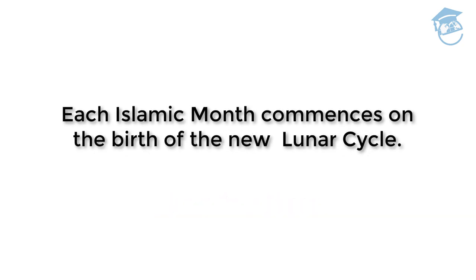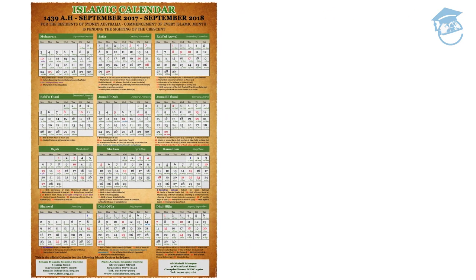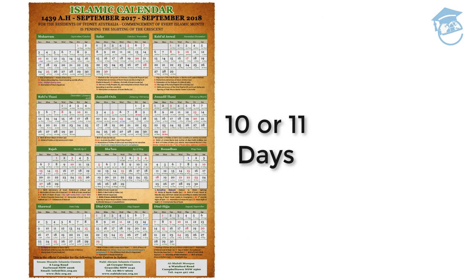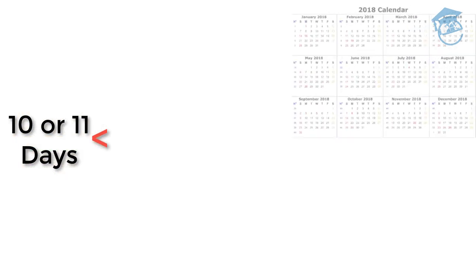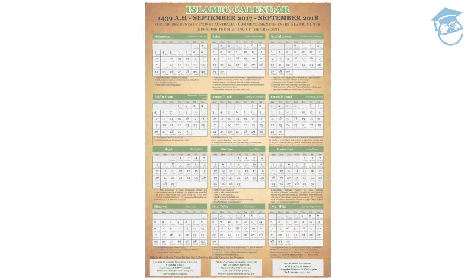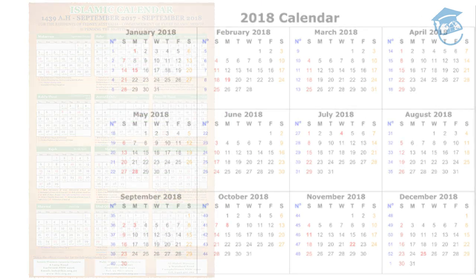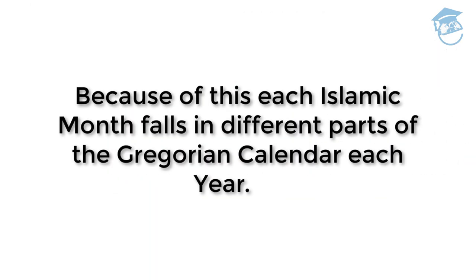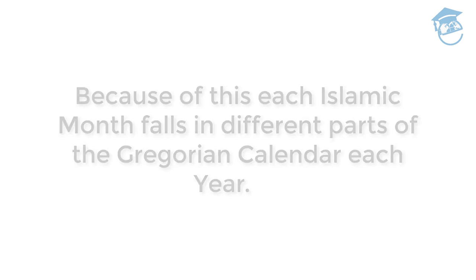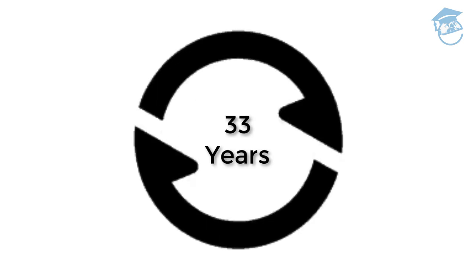Each Islamic month commences on the birth of the new lunar cycle. Since the Islamic calendar is 10 or 11 days shorter than the Gregorian calendar, the Islamic calendar lags behind the Gregorian calendar. Because of this, each Islamic month falls in different parts of the Gregorian calendar each year. This cycle repeats itself every 33 years.